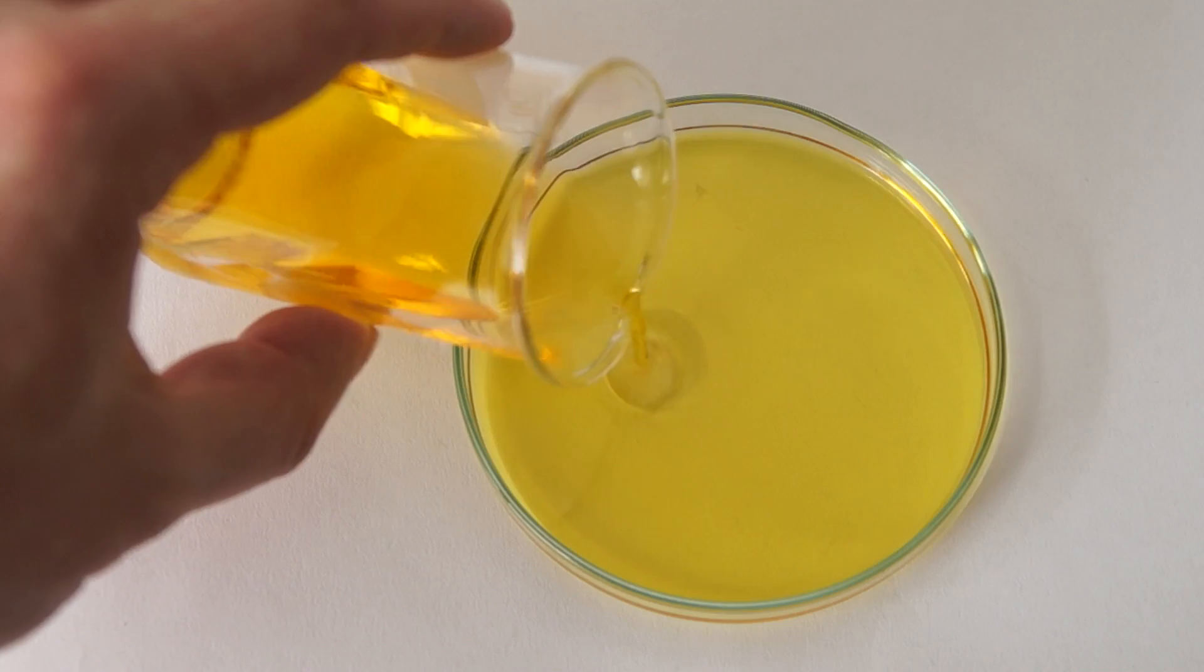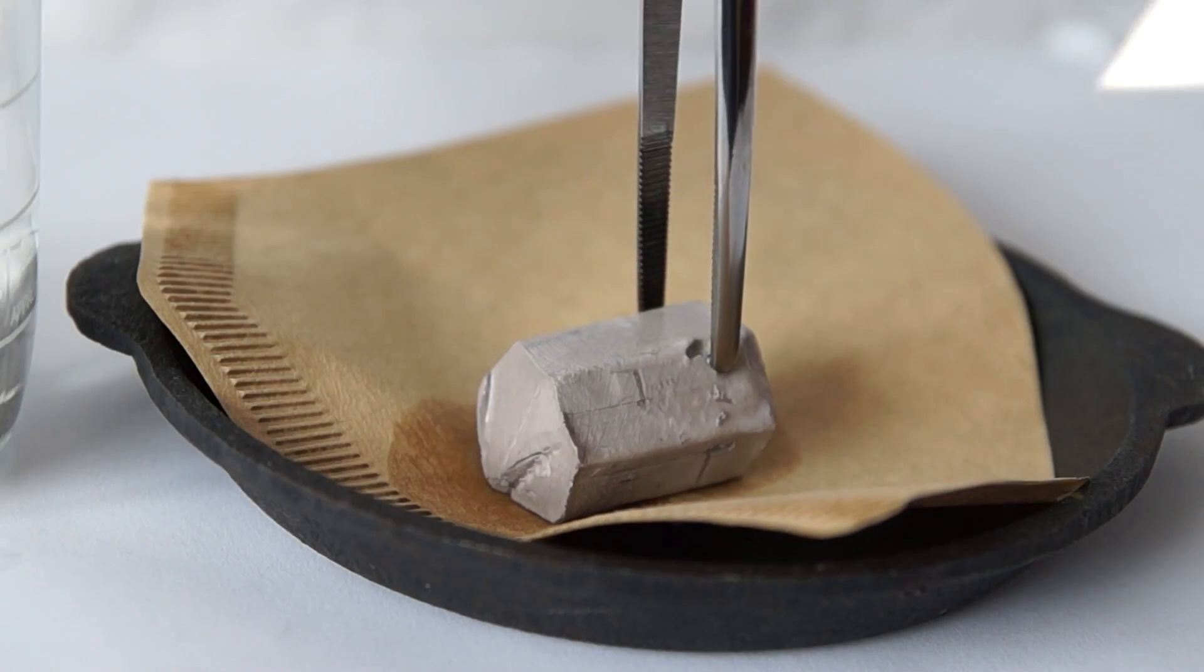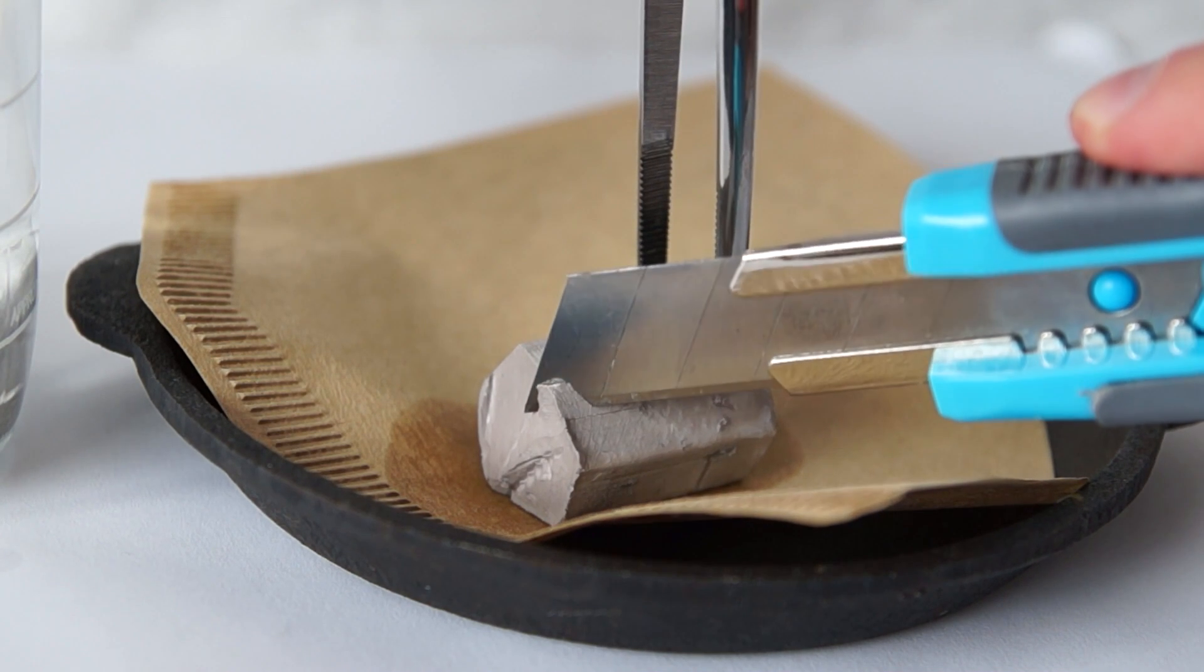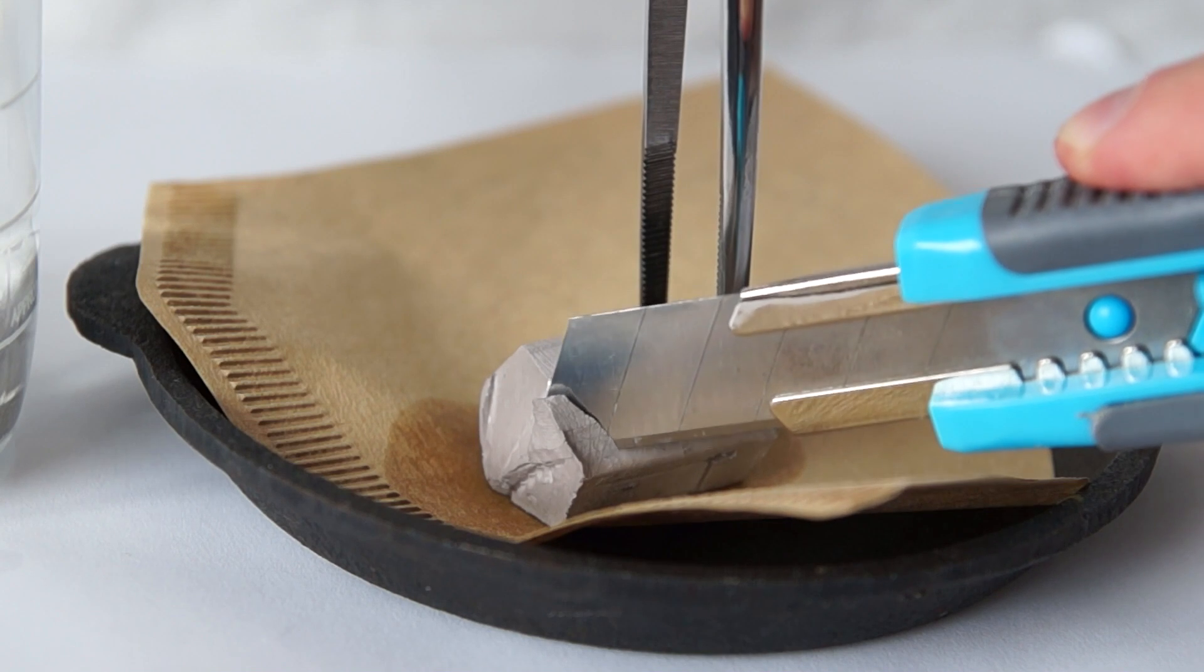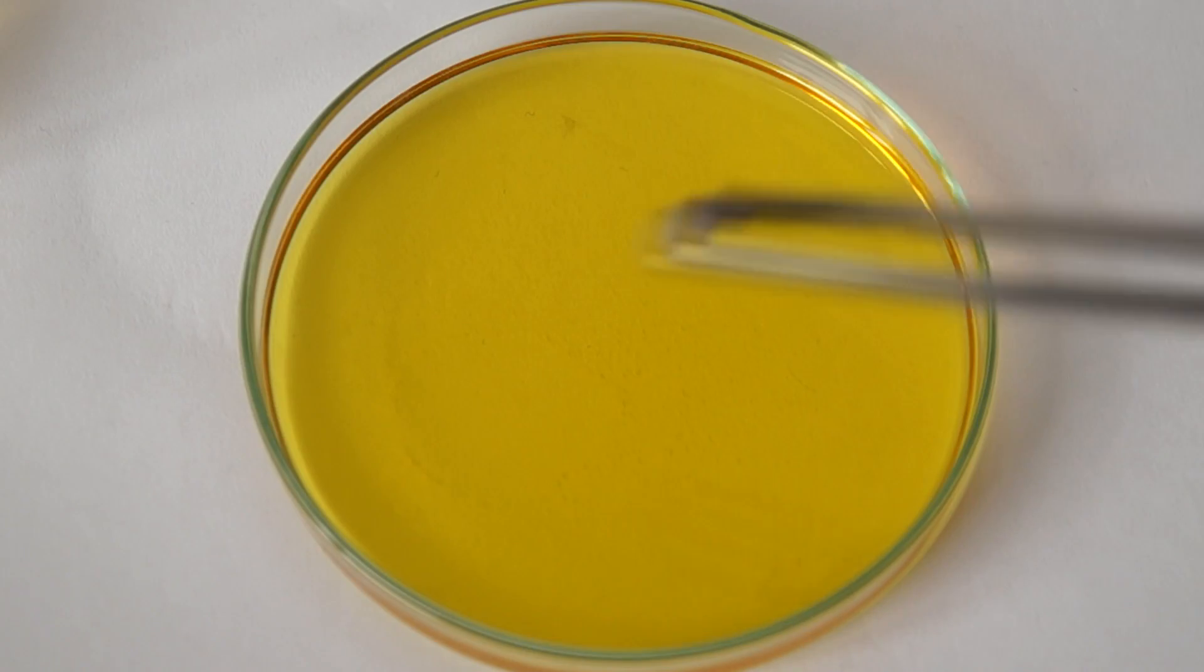Now let's put the resulting indicator mixture into a petri dish. For our experiment we'll also need metallic sodium. Sodium is an active alkali metal, so take a small piece of sodium and cut it into smaller pieces.